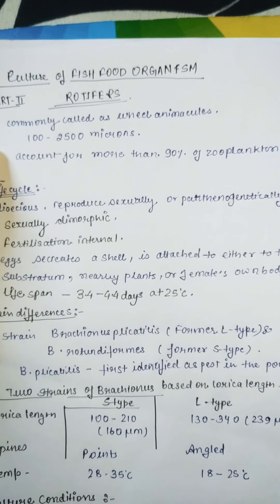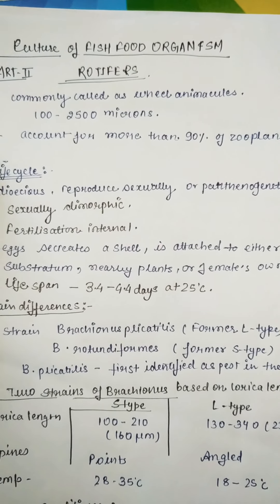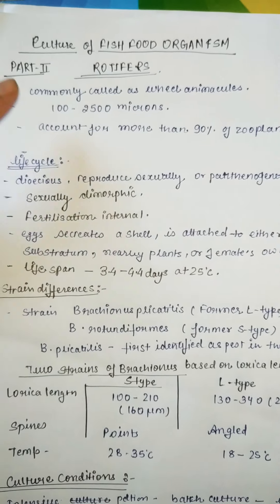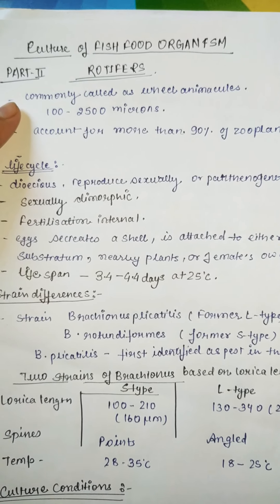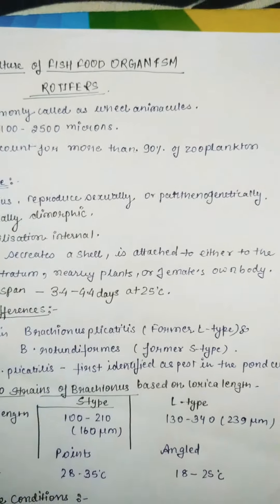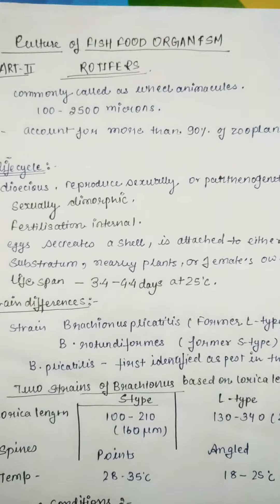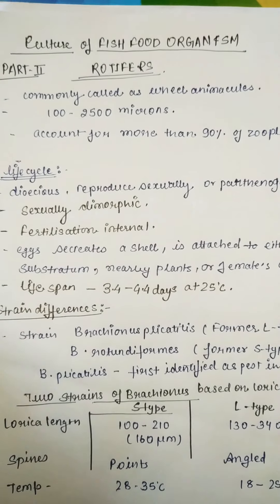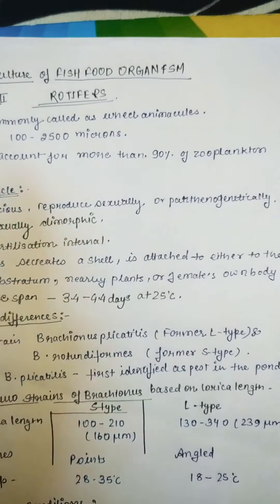Rotifers are commonly known as wheel animalcules and the size ranges from 100 to 2500 microns. This means every size of fish can eat rotifers as its size varies, and they account for more than 90 percent of zooplankton.